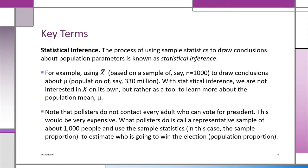Now we're going to talk about statistical inference. What is statistical inference? You know the English word 'infer' — this is the process of using sample statistics to draw conclusions about the population parameters. Suppose you take a sample of a thousand people from a whole population of 330 million. You got the sample mean, X-bar. You're going to use that X-bar because you're not so interested in X-bar on its own merits — it's a good tool to infer something about the population mean mu.